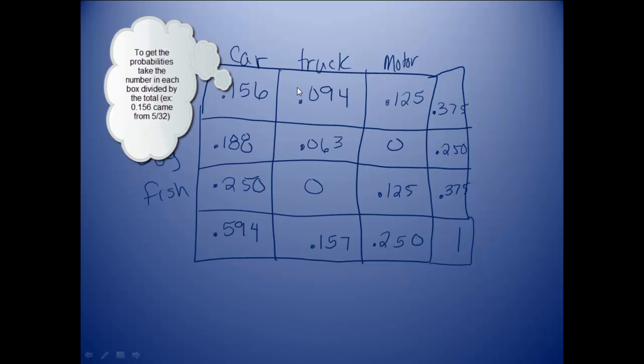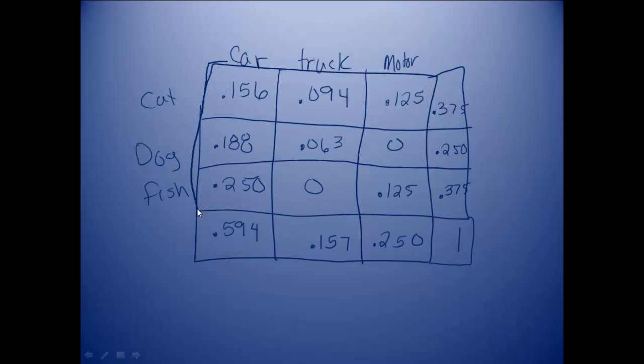I've taken my contingency table and I've turned it into a joint and marginal probability table. And now when it talks about the joint probabilities, it's talking about the cells on the inside of our table. Because those are the probabilities of the joint actions happening.